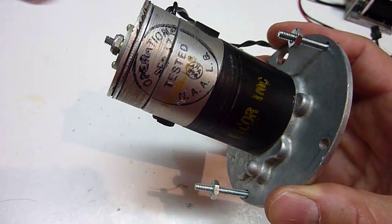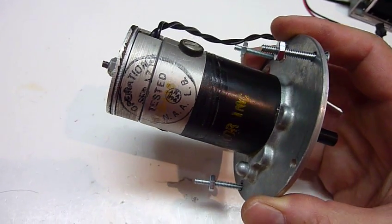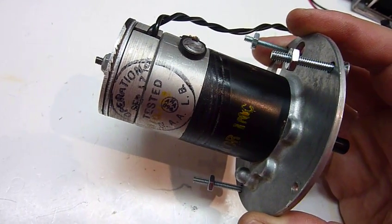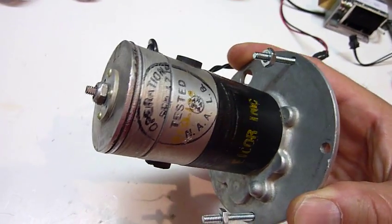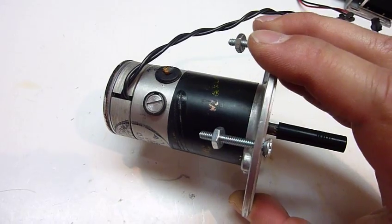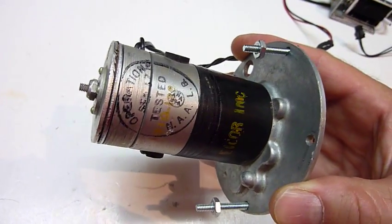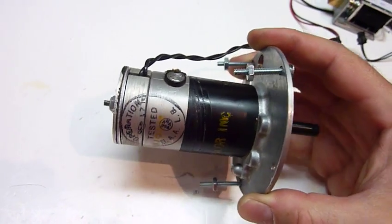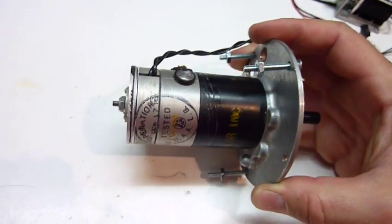If you look at it, it says tested 1940-something, September. It's a motor with brake from a tape recorder from the 1940s, you know, these big reel tape recorders.